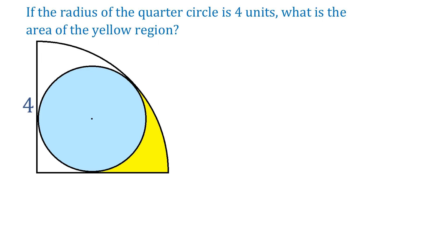Hello! In this figure we have a quarter circle with the radius of 4 units, and inside we have an inscribed circle. Then how can we find the area of this yellow region?